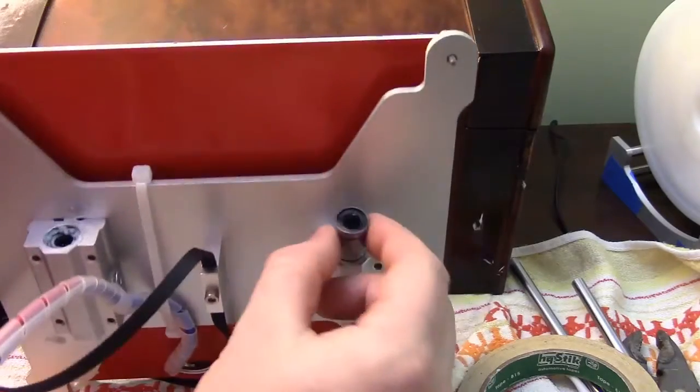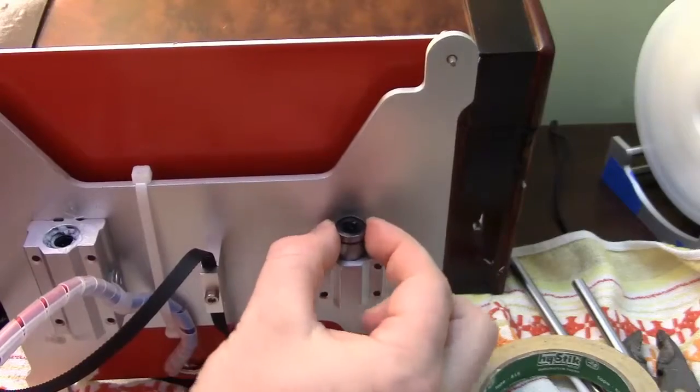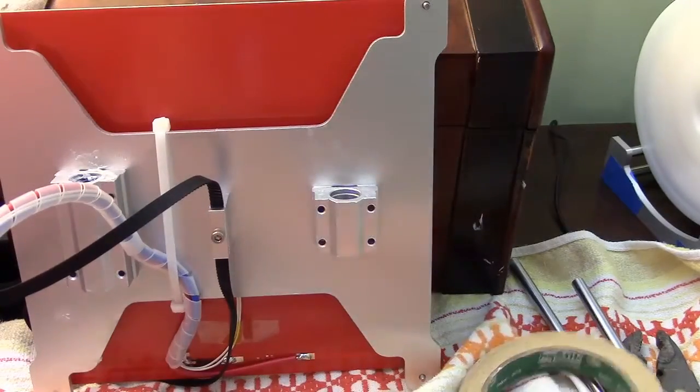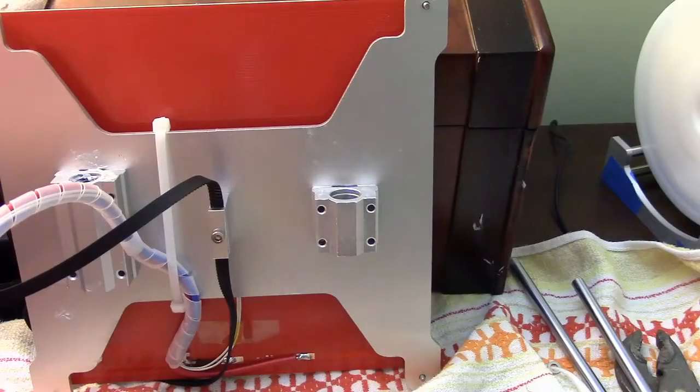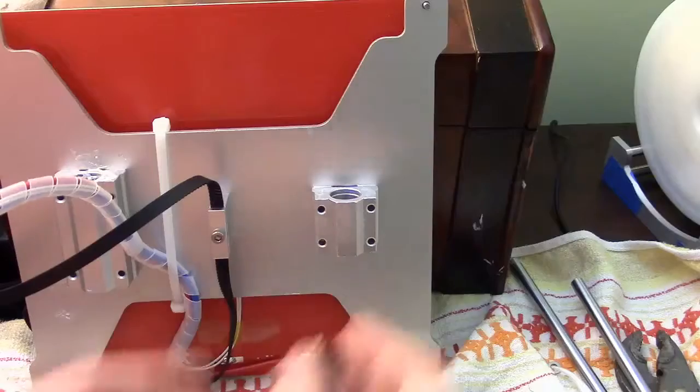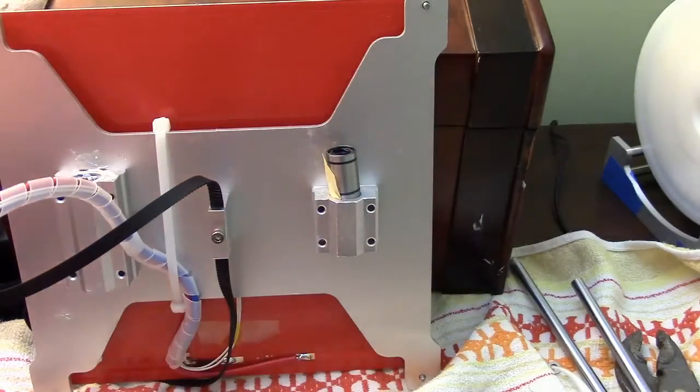All right guys, I got the bearing here. Just to show you, it's a little loose on this side. That's part of the problem. So what I'm going to do is just take a little tape and then stick it here. I want to push it down in here and it'll tighten it up a little bit.